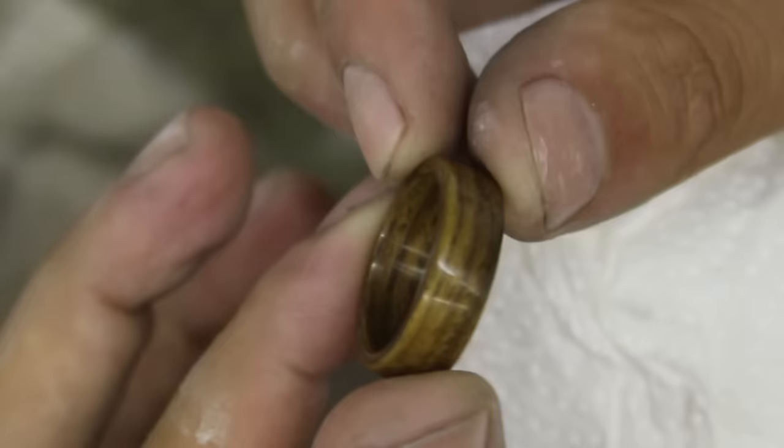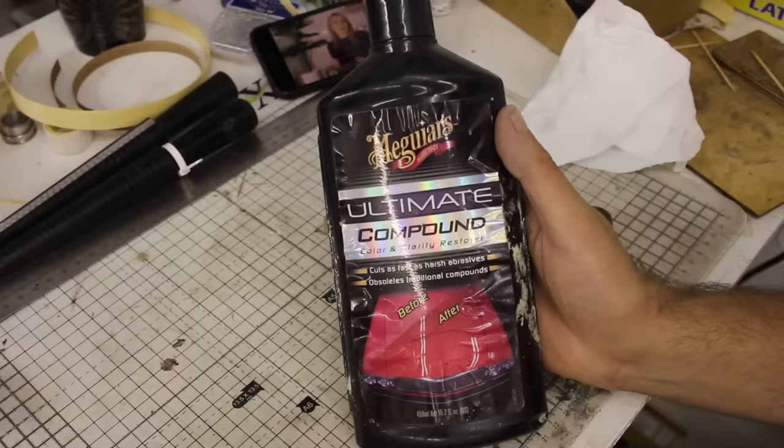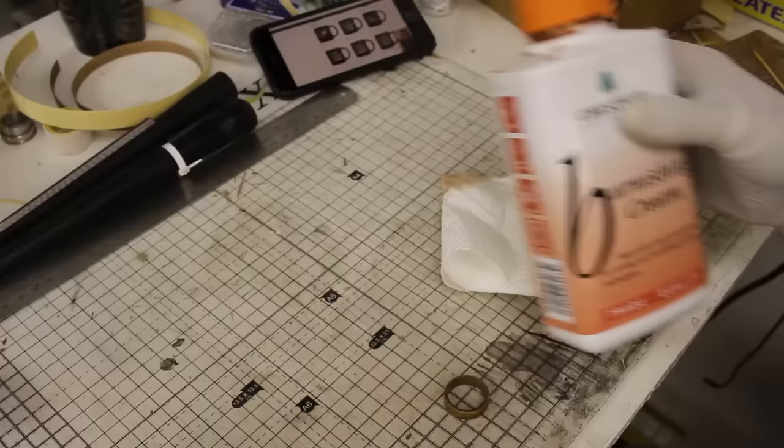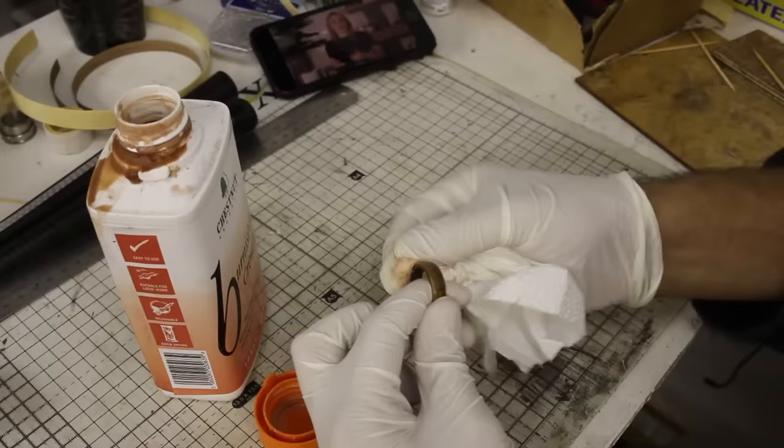Now for this final stage of polishing if you can't find a burnishing cream you can use an automotive polish like this Meguiar's ultimate compound but I actually way prefer a burnishing cream from chestnut products in the UK and pretty much I just applied a small amount of the burnishing cream to the ring and just rubbed it in and continued to work that around the inside the outside and the edges until it was super shiny.